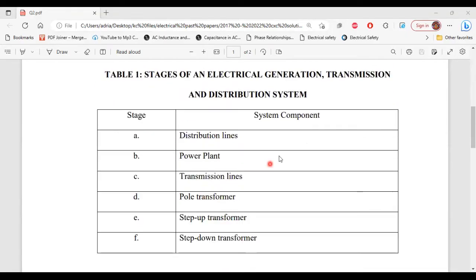So here we have table one with the different stages of the electrical generation, transmission, and distribution system. Now, based on the statement that was given, these stages are not listed in their correct order. Let's look at what part one of B is asking for.